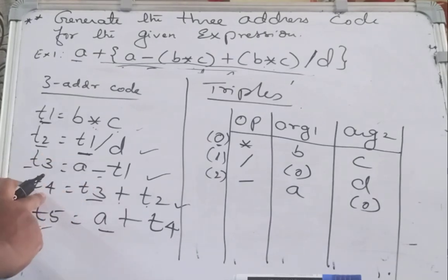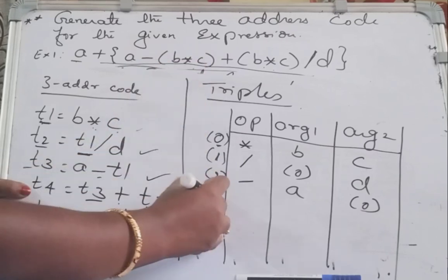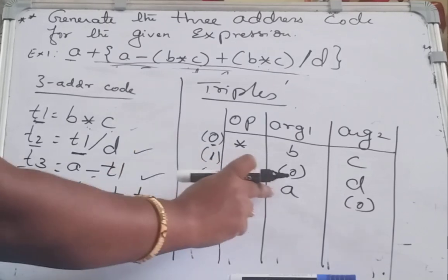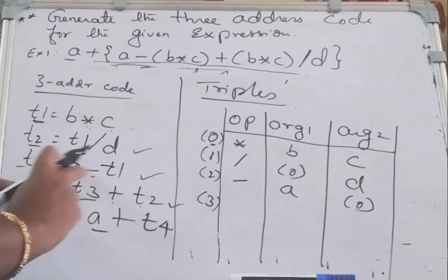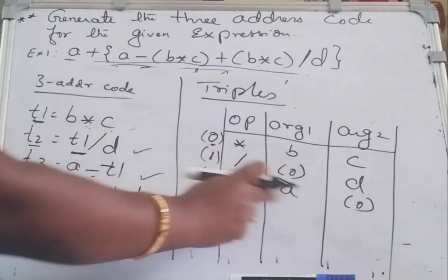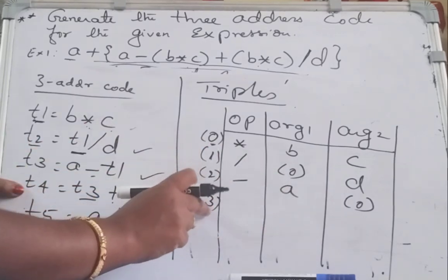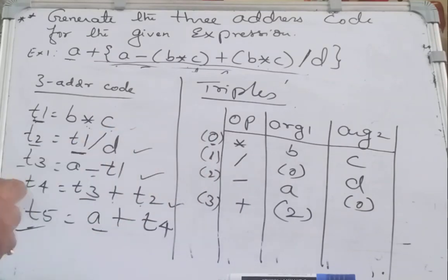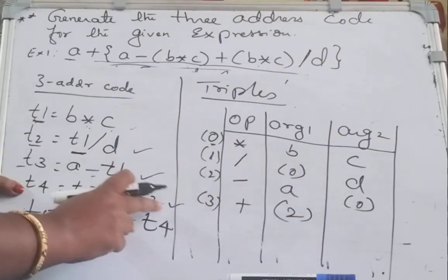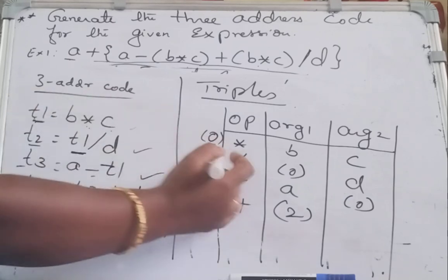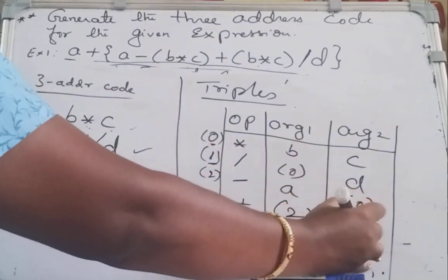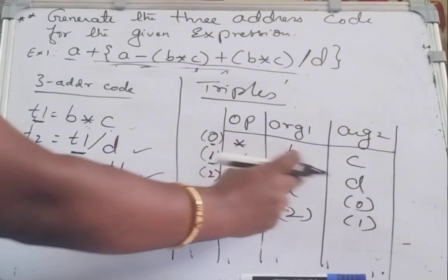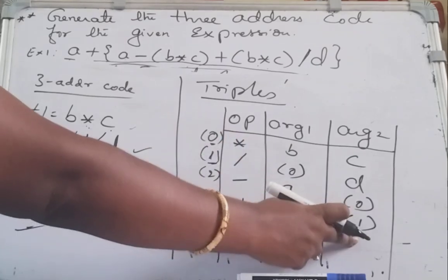The next instruction is address 3: T4 = T3 + T2. T3 — what is the address of T3? A minus T1 = T3, so T3's address is 2. The operator is plus, so write 2 for argument one. What is the address of T2? T2's address is 1. So write 1 for argument two.